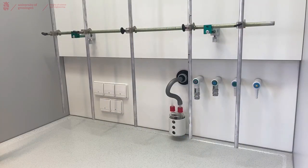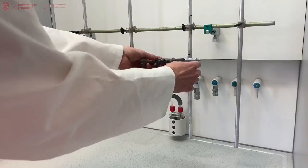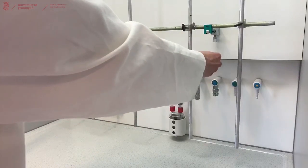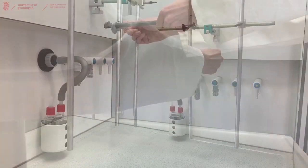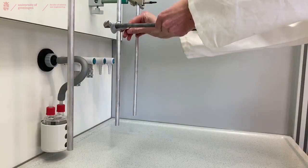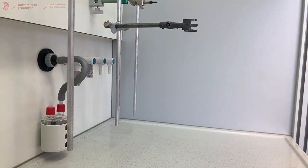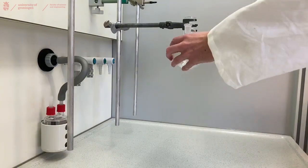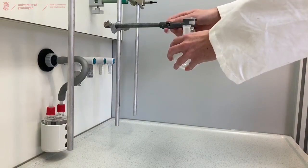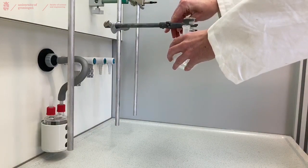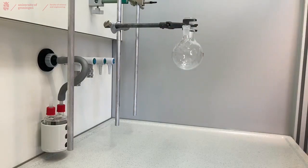To build our setup we will start with clamping our three neck flask to the fume hood. Place the clamp tight in the fume hood and attach your three neck flask. This clamping is the most important of the setup as this will be the only supporting clamp.